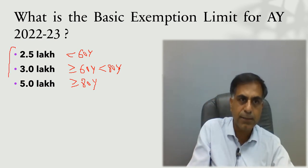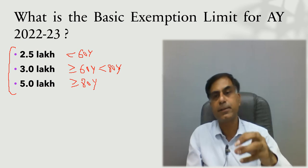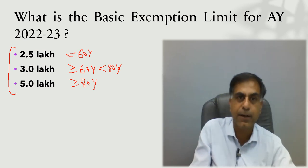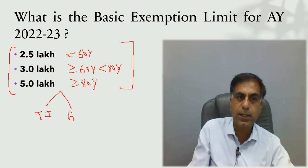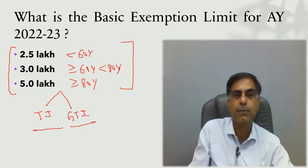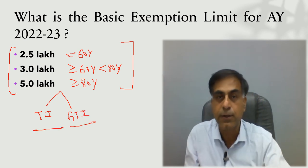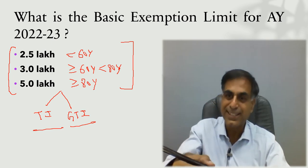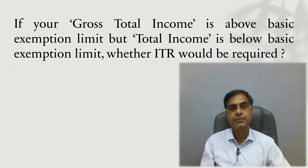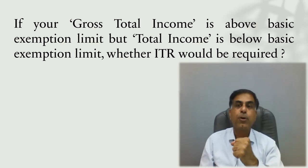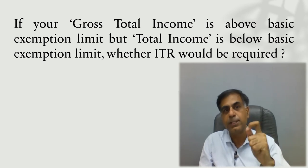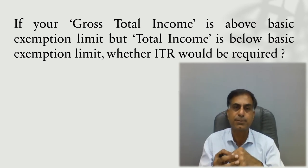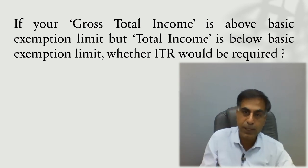With reference to the basic exemption limit, it is generally determined whether it is mandatory for a person to file the ITR or not. However, an important question is: whether this basic exemption limit is the criteria of total income or gross total income? If your gross total income is above the basic exemption limit but total income is below it, whether ITR would be required or not?